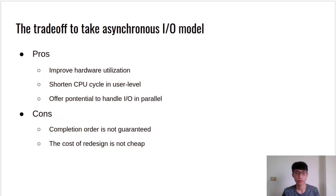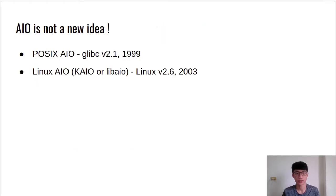To avoid this kind of dependency issue, the application must be redesigned, and apparently this procedure is not trivial. Actually, asynchronous I/O is not a new idea. There is already an I/O interface to use. The POSIX asynchronous I/O interface is a user-level implementation. It allows applications to initiate one or more I/O operations that are performed asynchronously. Besides user-level implementation, Linux kernel supports native asynchronous I/O interface after Linux 2.6.